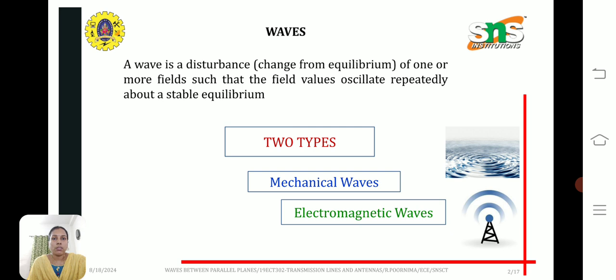So first of all, what is a wave? A wave is a disturbance or change in equilibrium of one or more fields such that the field values oscillate repeatedly about a stable equilibrium.